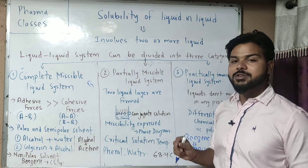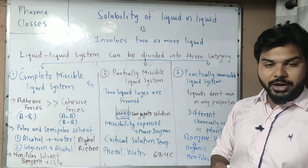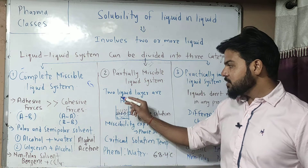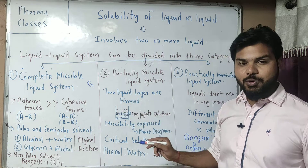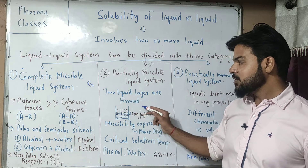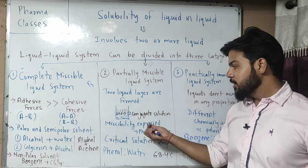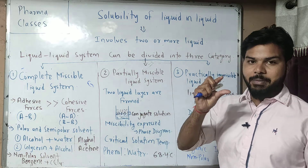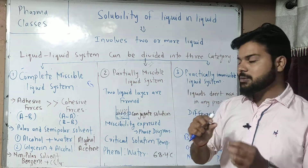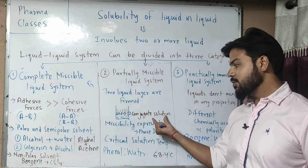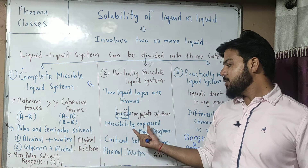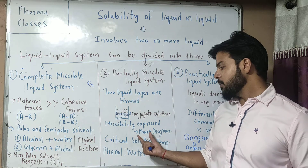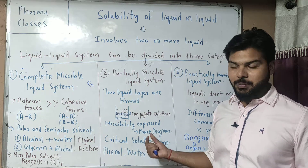Second, we have partially miscible liquids. They are not completely mixed, but when phenol and water mix, a two-liquid system forms — a partially mixed-up system. We call these conjugate solutions. Their miscibility depends on temperature, which is shown in a phase diagram.